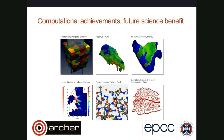One of the things we can do is talk about the future science benefits of the projects. If you go to the Archer website you'll see that for every completed project we put up a summary of what they've done and how it's important for their science. There's one there for every one of the projects that's finished.